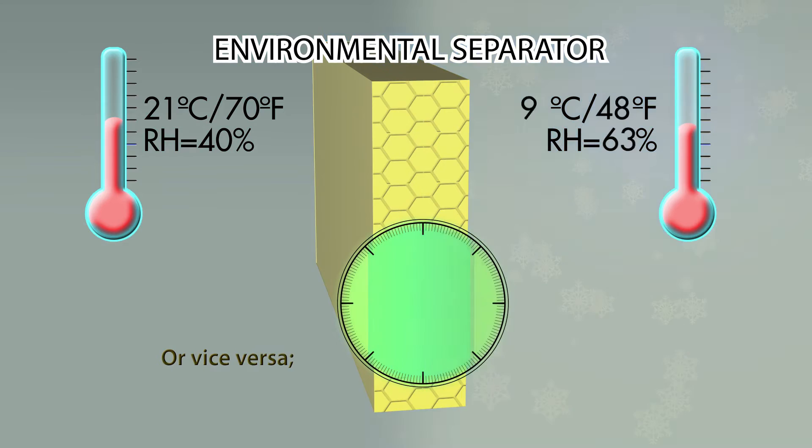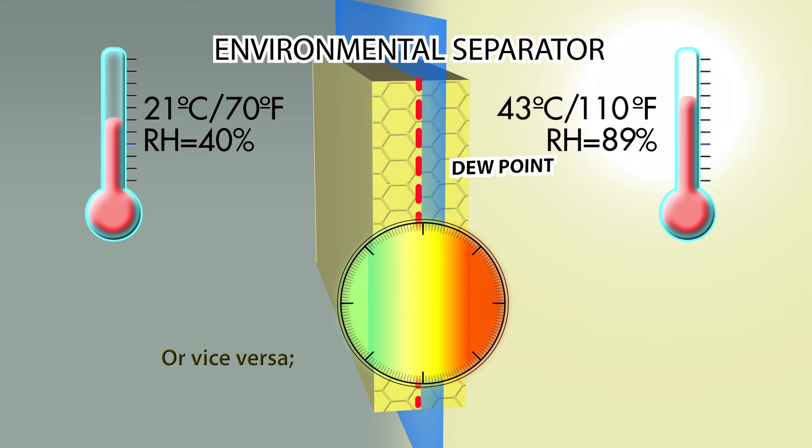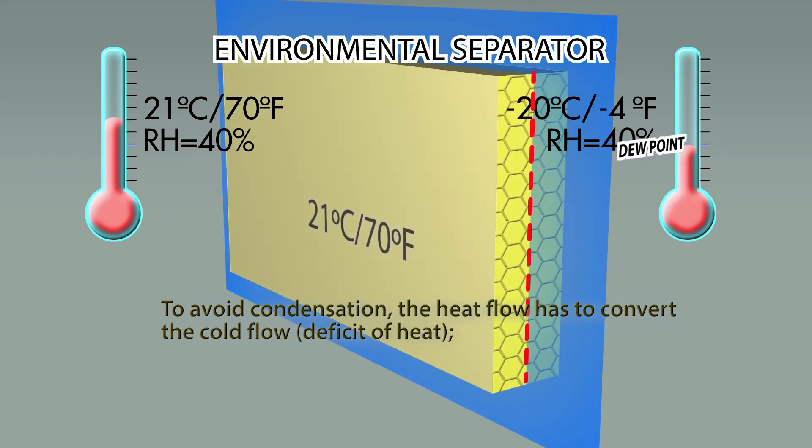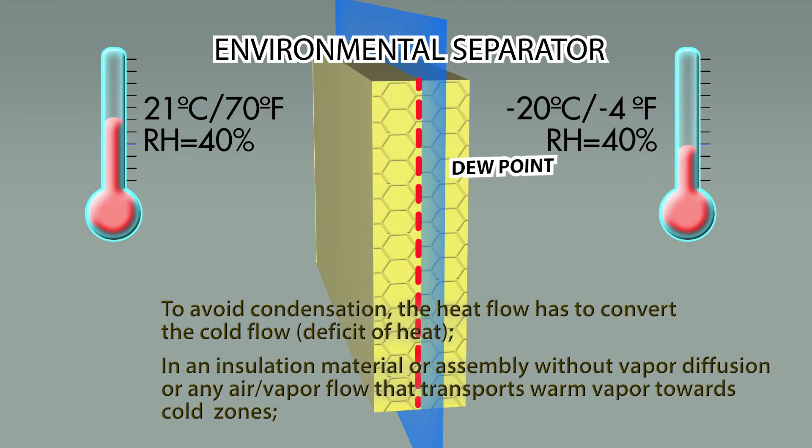Environments can be changed at any time without affecting the principle of avoiding condensation function, as the environmental separator created does not depend on climate and seasons. There are two heat-energy flows that convert one another inside the insulation, starting with the temperature of the interior surface versus the temperature of the exterior surface.